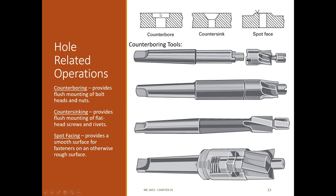Related operations: a counterbore is used when you need a bolt head to sit flush — counterboaring tools create a nice sharp corner. A countersink is used for flat socket head cap screws with a bevel — make sure the angle of your countersink matches your fastener. Spot facing: if you have a round workpiece and need to drill into it, you need to provide a flat spot face for the center drill to index on. That's usually a milling operation — mill a flat, use a center drill, then drill through.